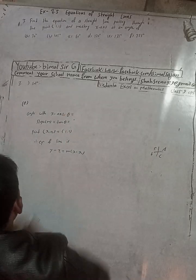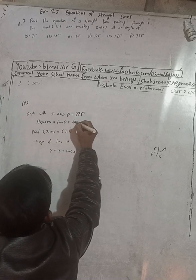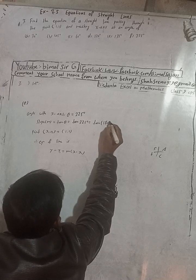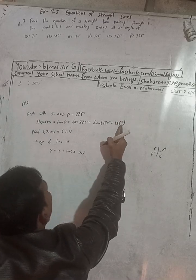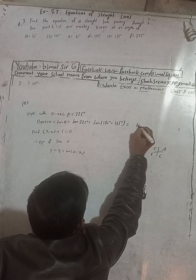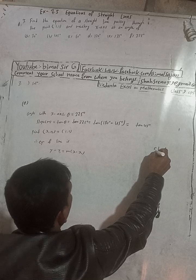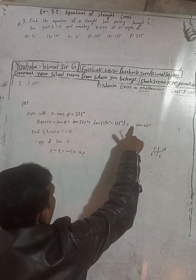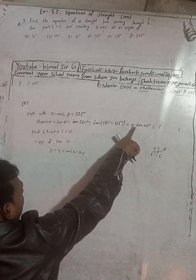For part (f), the angle with the x-axis is 225 degrees. Slope m equals tan 225 degrees. This can be written as tan(180 plus 45) degrees. Using the CAST rule, 225 degrees is in the third quadrant where tangent is positive. So tan 225 equals plus tan 45 equals 1.